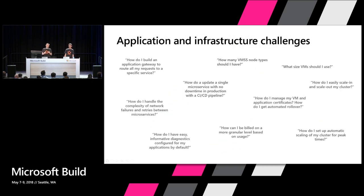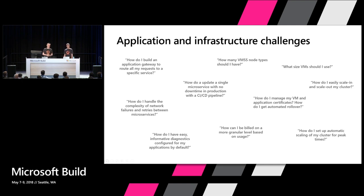We still see the word 'cluster' accounting for the majority of our support calls. Customers ask: how do I scale up my cluster, what's a VM node type, how do I manage certificates? There's still a lot of decision-making around managing your cluster and all the operational side. There are also things in the application space — how do you set up a gateway that routes to all your services efficiently? We look at all these challenges and think: how can we deliver a better Service Fabric experience and take away even more pain?